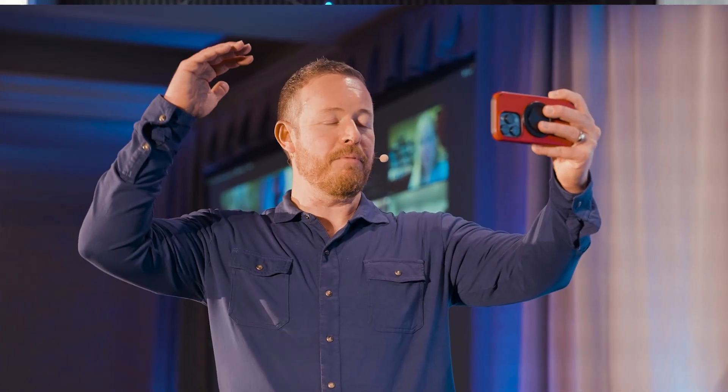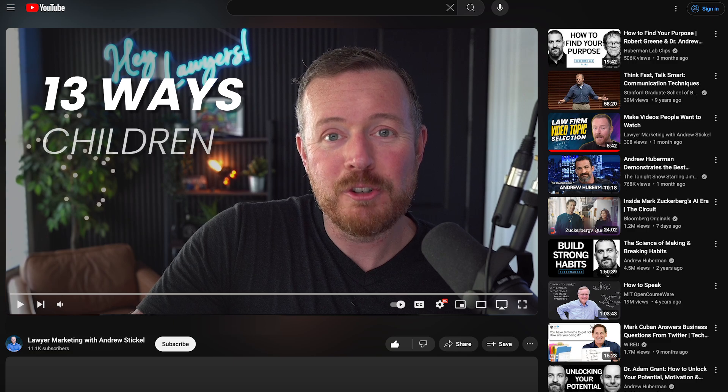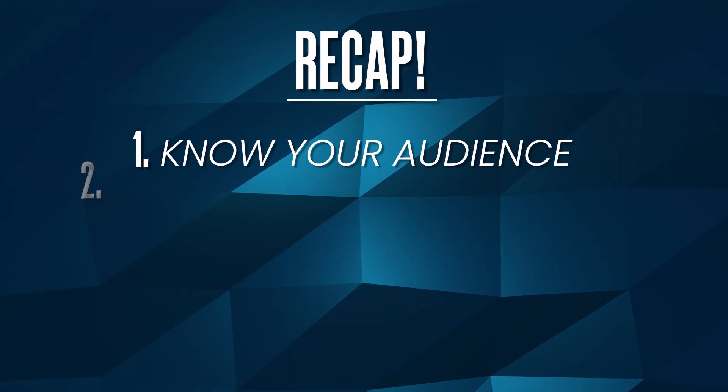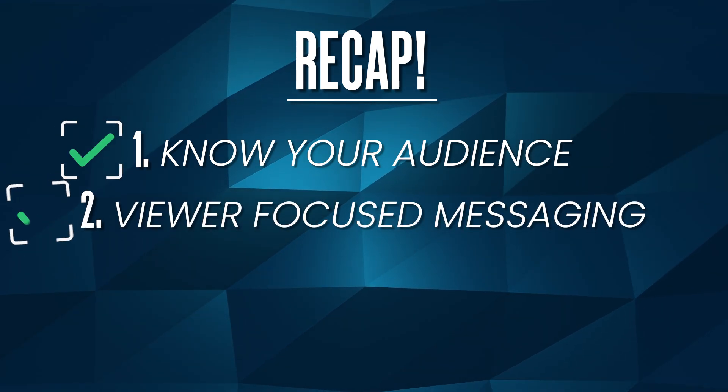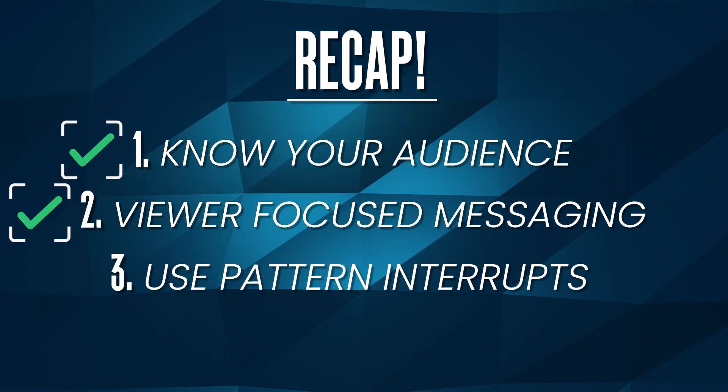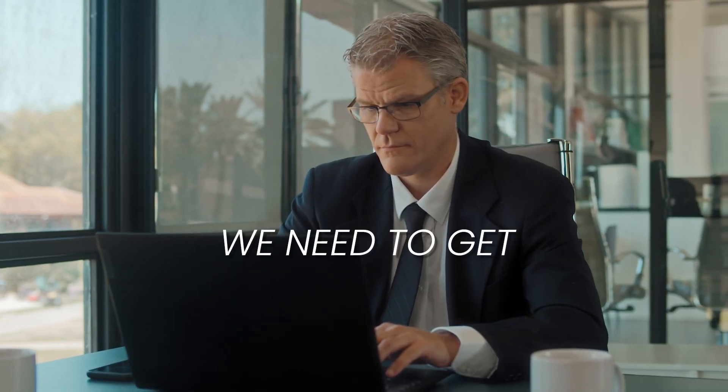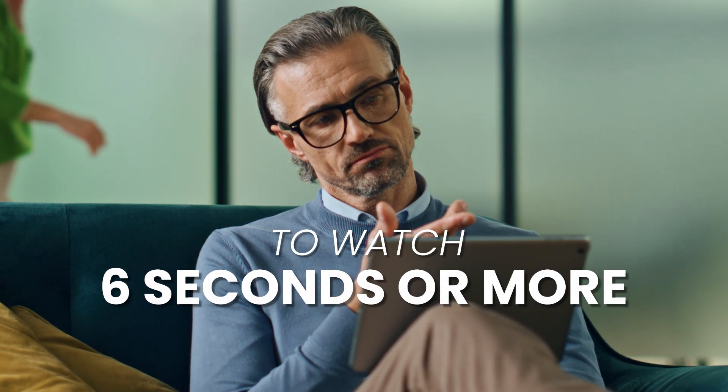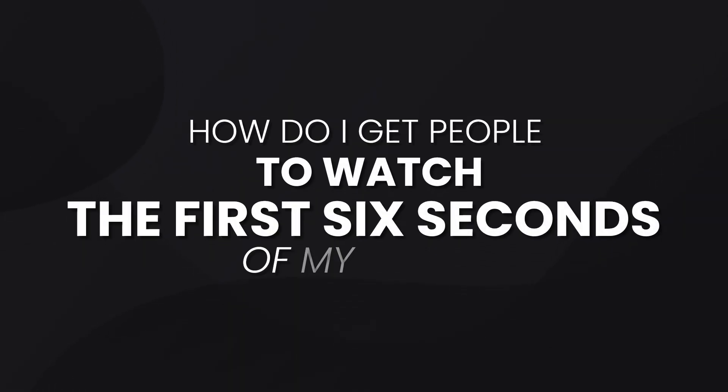What I like doing — we had a video once that was '13 ways children benefit from divorce.' Something like that knows your audience, makes it about them, and it's going to break the pattern. There's a course I recently took from a very successful Facebook influencer. The secret was: we need to get 200 people to watch six seconds or more of this video. So the question you have to ask yourself is: how do I get people to watch the first six seconds of my video? What can I do that's going to get them very, very interested?